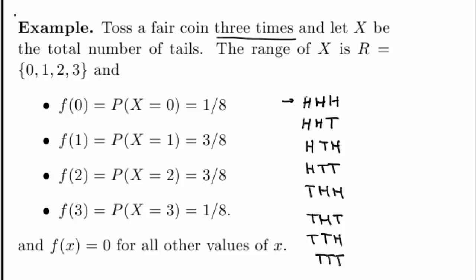I can get three heads in a row, two heads and a tail, and so on. With a fair coin, each outcome is equally likely, and so each outcome has a probability of 1 over 8. All I need to do to get the probability distribution function is to figure out the value of x for each of these eight possible outcomes.